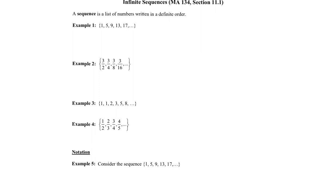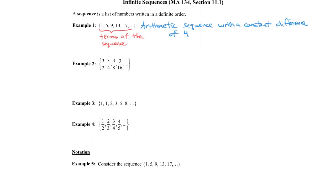A sequence is a list of numbers written in a definite order. Here's an example — these numbers are called terms of the sequence. This particular sequence is an arithmetic sequence with a constant difference of four. An arithmetic sequence is a list of numbers where you're constantly adding or subtracting. Here I start at one and constantly add four, so there's a definite order.